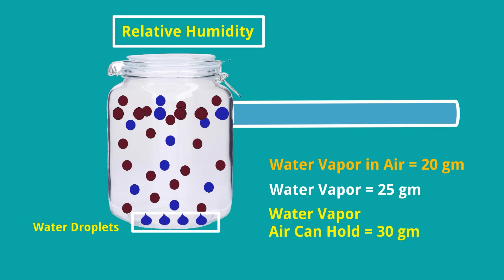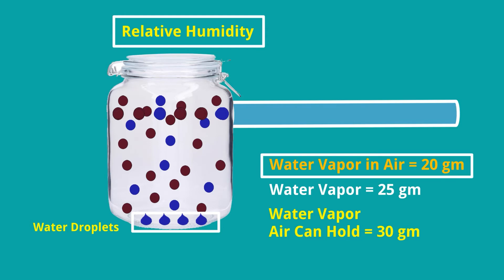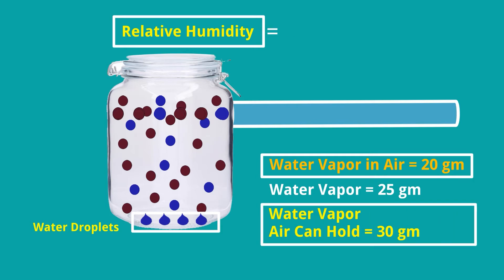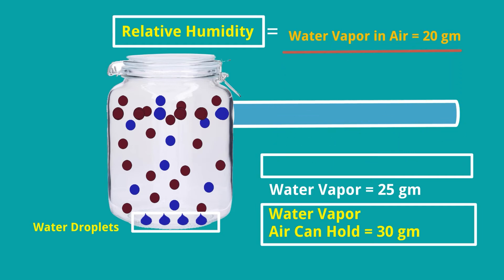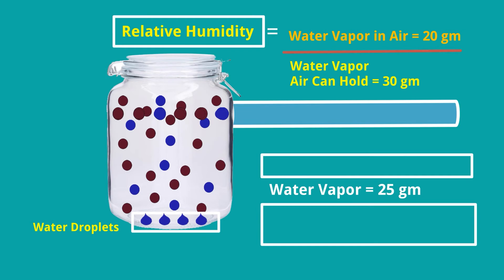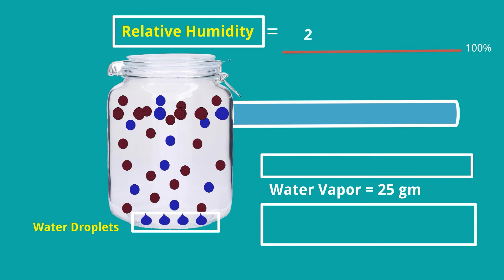The maximum water vapor the air can hold is 30 grams. The water vapor currently in the air is 20 grams. Dividing water vapor in air (20 grams) by the maximum water vapor the air can hold (30 grams) gives the relative humidity, expressed as a percentage. So 20 divided by 30 gives 66.67% — this is the relative humidity.